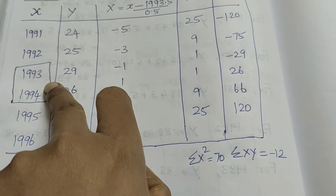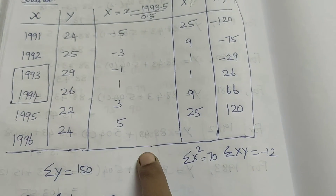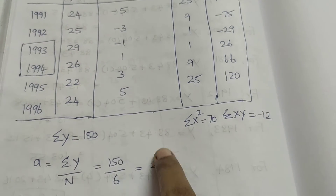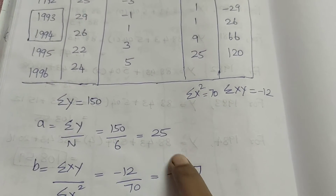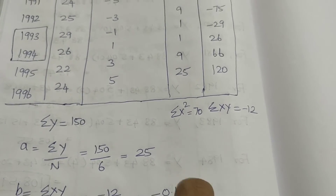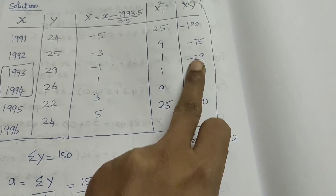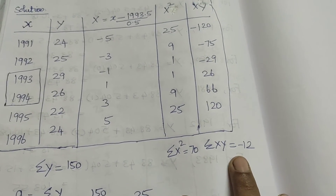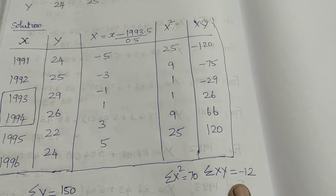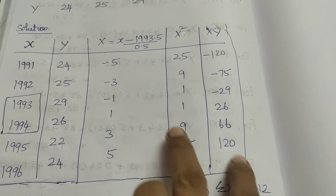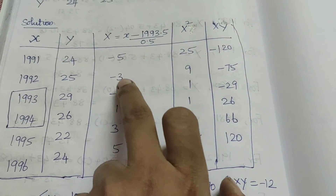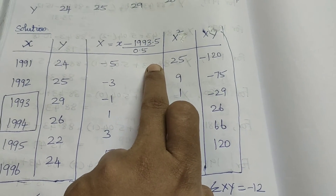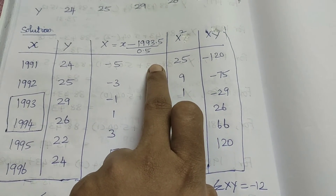For the year 1991, the x value is -5. Using Y = a + bX with b = -0.17, we can obtain the trend values. In this session, we will explain the trend values for each year.